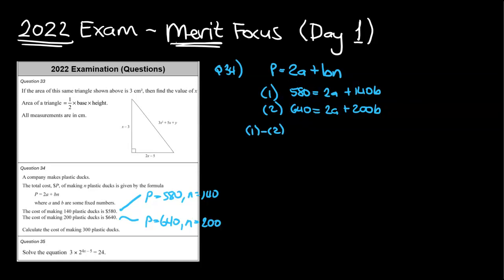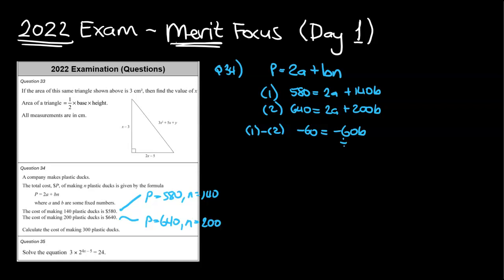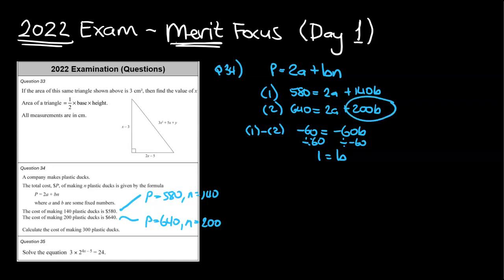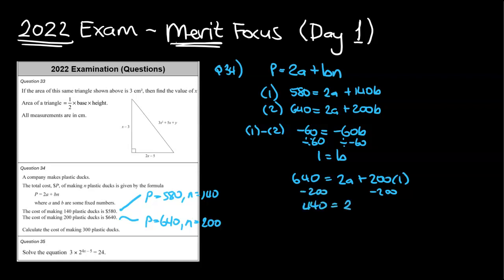So equation 1 minus equation 2: this minus this is going to be negative 60, and that will be equal to 0 for the 2a terms — they cancel each other out. So that will leave us with 140 minus 200b, which is negative 60b. I can cancel out that negative 60 by dividing both sides by negative 60. So negative 60 divided by negative 60 is 1, and that is what b is equal to. I'm now going to put this into the easier-looking equation — probably the 200 one. So we've got 640 is equal to 2a plus 200 times 1. Minus 200 from both sides gives 440 is equal to 2a, and dividing by 2 gives a equals 220.